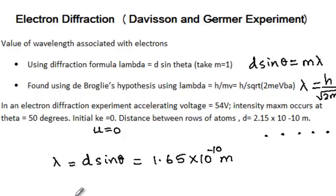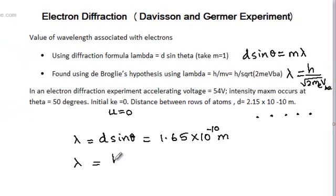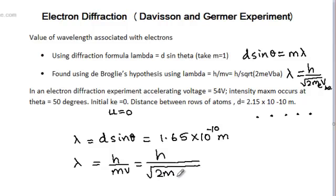And in the second case, if you use the second formula, which is de Broglie's hypothesis, we have lambda equals h over mv, which is h over... We've expressed the momentum in terms of the potential difference because that is the energy which the electrons acquire in the electron gun in this experiment.